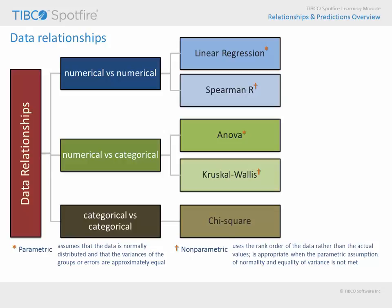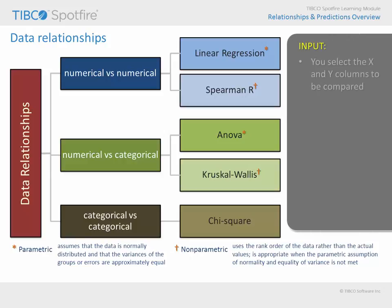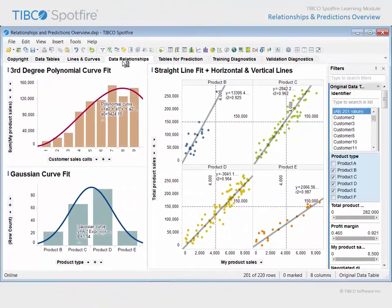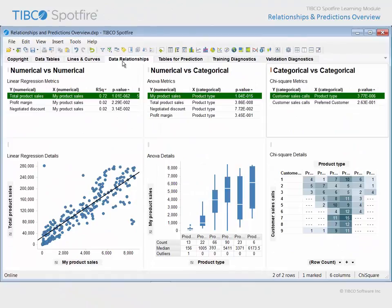Each of these options involves selecting which columns will serve as X and Y values for these pairwise comparisons, and will result in a table of metrics showing the comparison results, as well as a dynamic visualization which allows you to view the details of each pairwise comparison. Let's return to our demonstration. On the tab titled Data Relationships, all three column comparison options have been applied. The numerical versus numerical results, displayed here, include a table of metrics resulting from the application of pairwise linear regression comparisons.